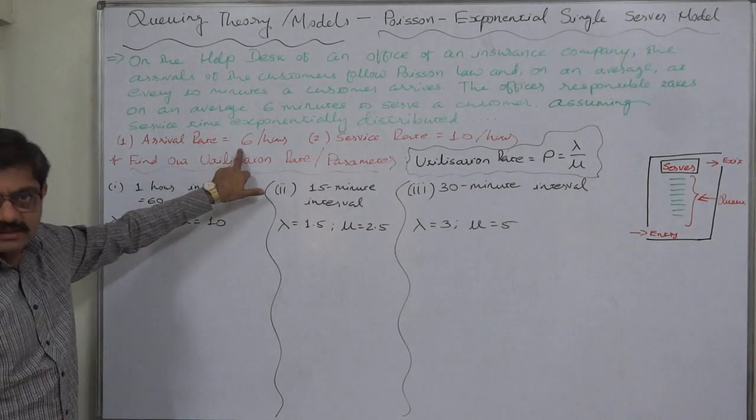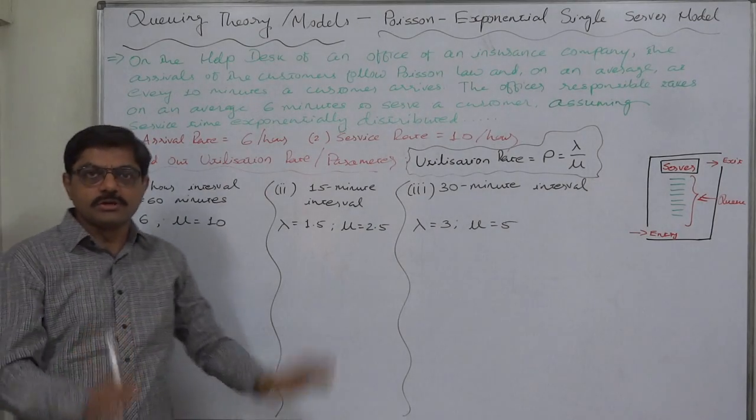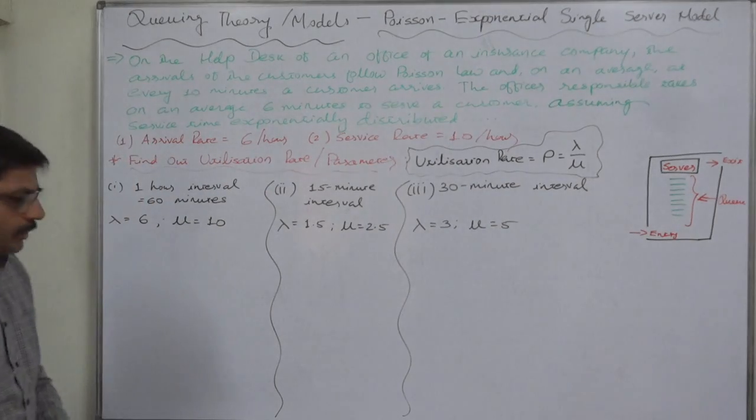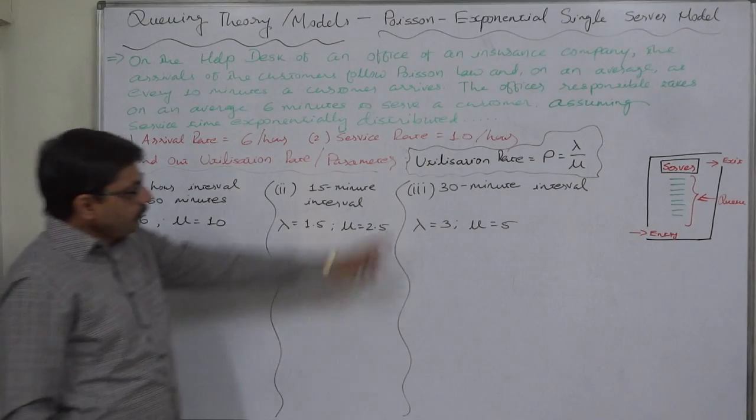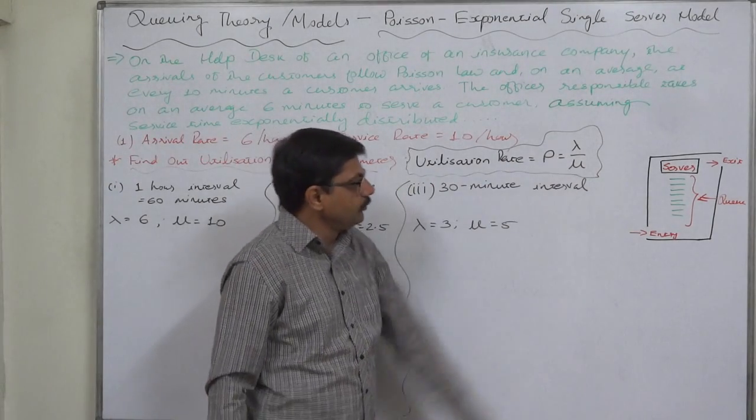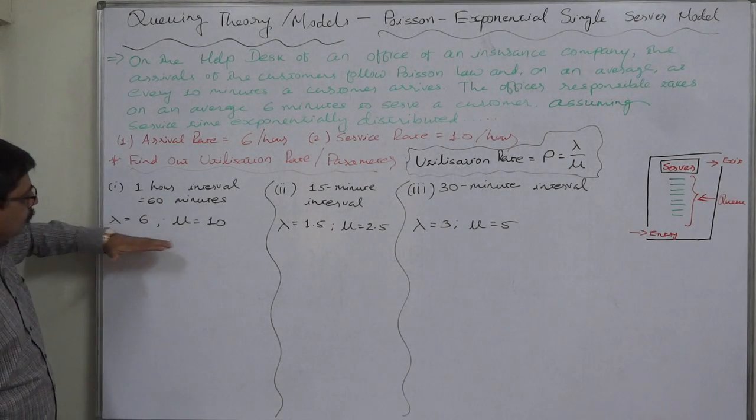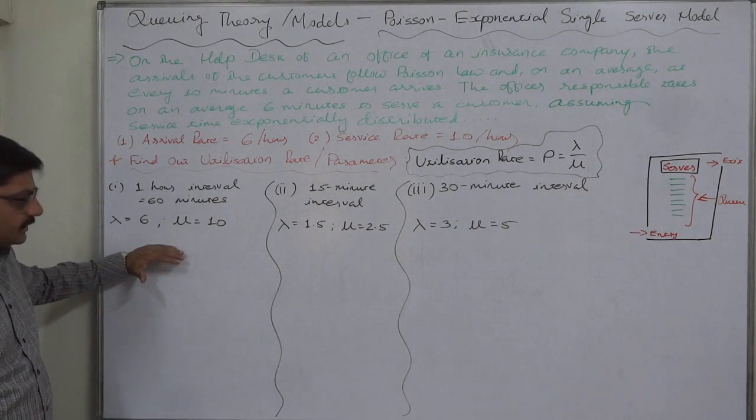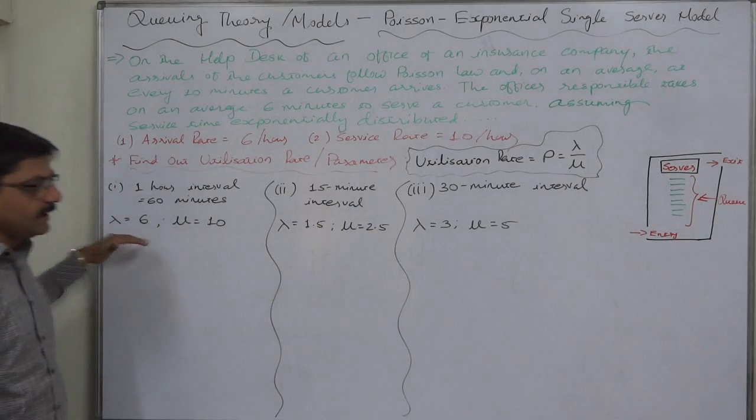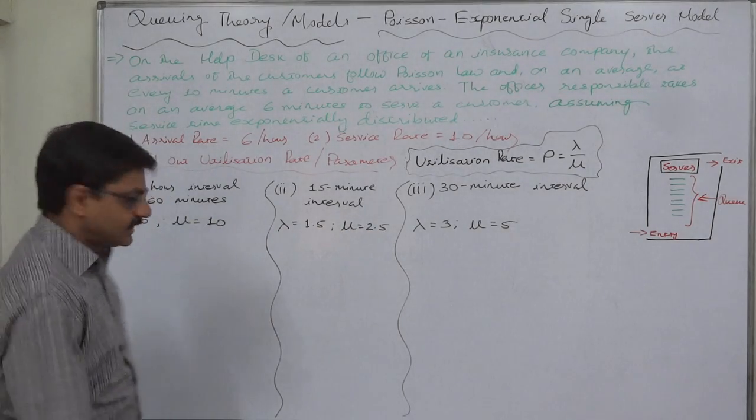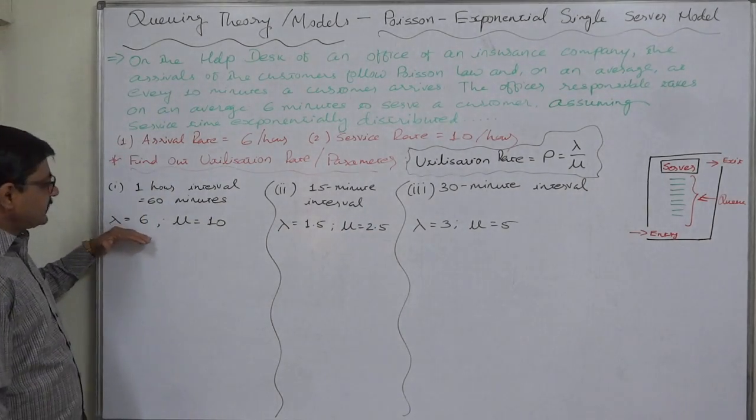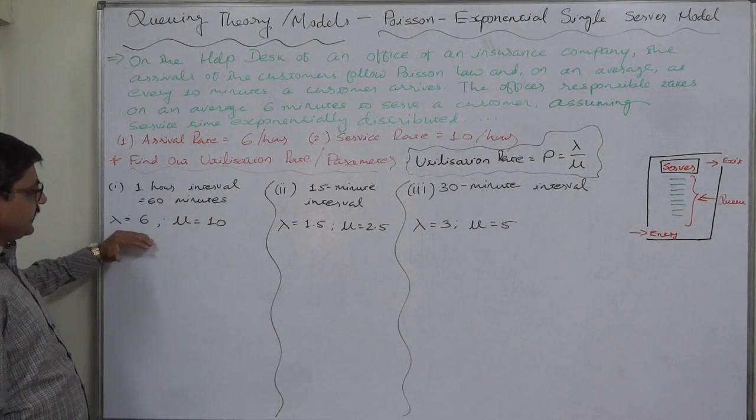Now, utilization rate rho equals to lambda divided by mu. Let us take the parameters of one hour into consideration. We have already calculated in our two previous lectures: lambda is 6, mu is 10. Arrival rate is 6 and service rate is 10 per hour.